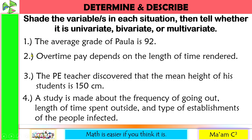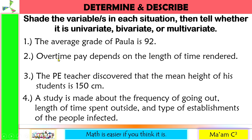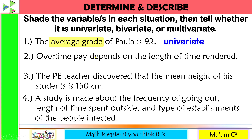Number one: the average grade of Paula is 92. What is the attribute here that may vary? It is the average grade. We only have one variable, so this is univariate.